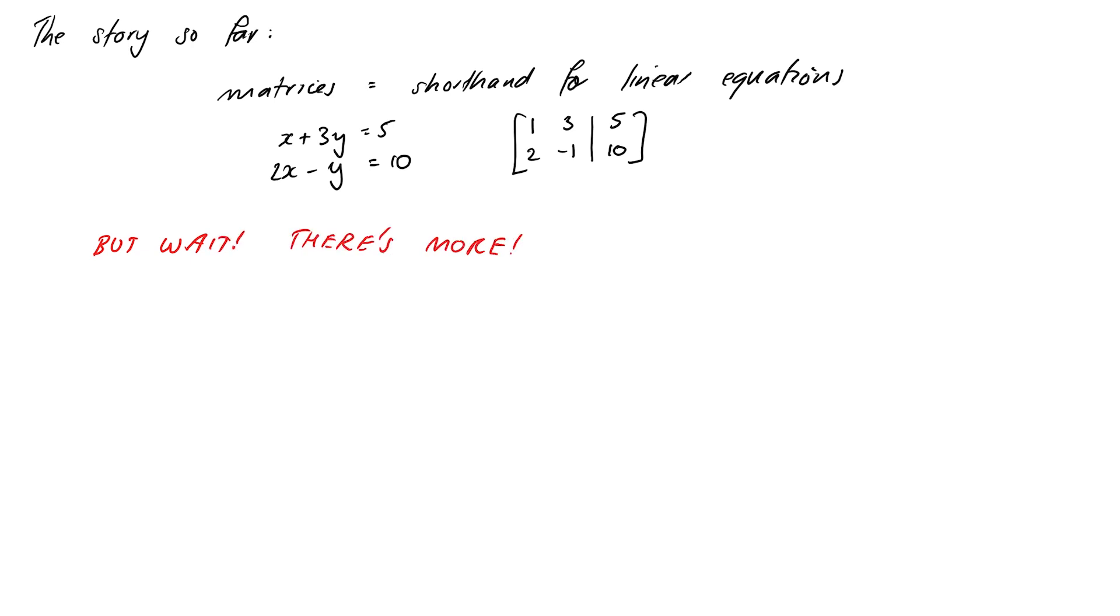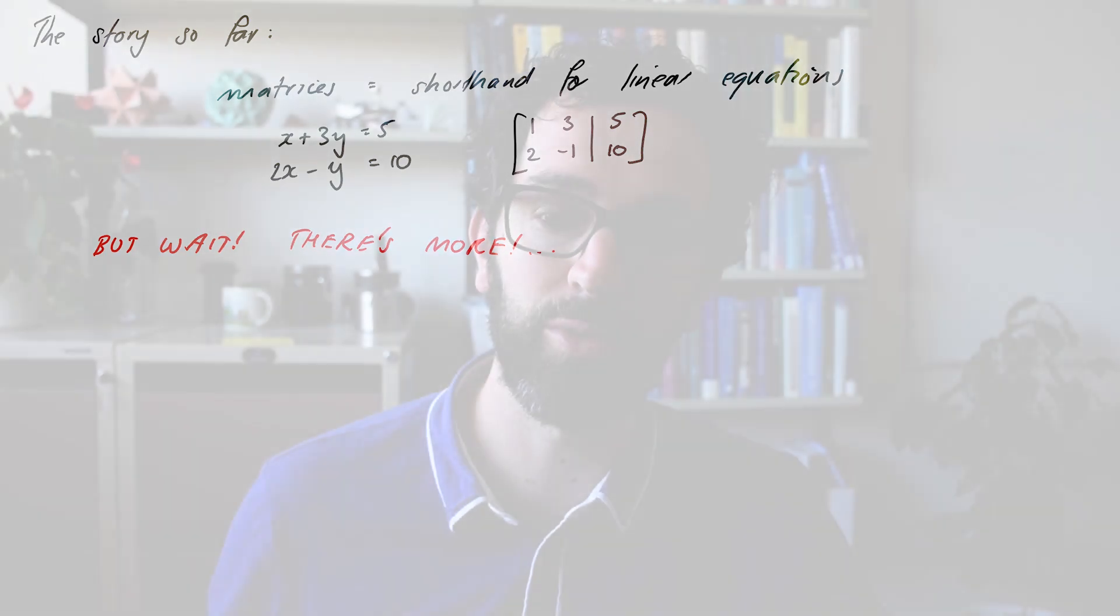Kia ora koutou. So far in this course we've spent quite a lot of time looking at vectors - we learned about their geometry and how to use them to describe things like lines and planes. Then we took a detour into matrices, looking at them as shorthand for systems of linear equations. Now we're going to take a more sophisticated view of what matrices are, thinking about how matrices and vectors operate together.